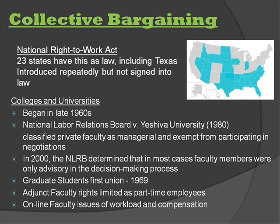However, in 2000, the NLRB determined that in most cases, faculty members were only advisory in the decision-making process. There are three groups of employees who may be more active in collective bargaining in the near future: graduate students, who established their first union in 1969 at the University of Wisconsin; adjunct faculty, whose rights are somewhat limited as part-time employees, though collective bargaining does exist at places such as New York University; and online faculty, who have issues of workload and compensation, including number of courses, number of students per course, time required to prep and work online, and ownership of course content.